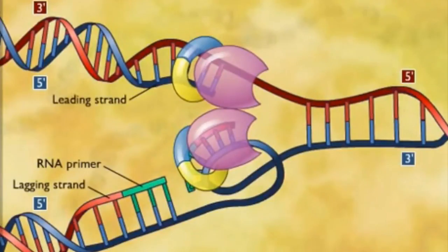The leading strand is copied toward the replication fork. The lagging strand is copied backwards by being drawn out in loops and copied one section at a time. The lagging strand moves away from the replication fork.